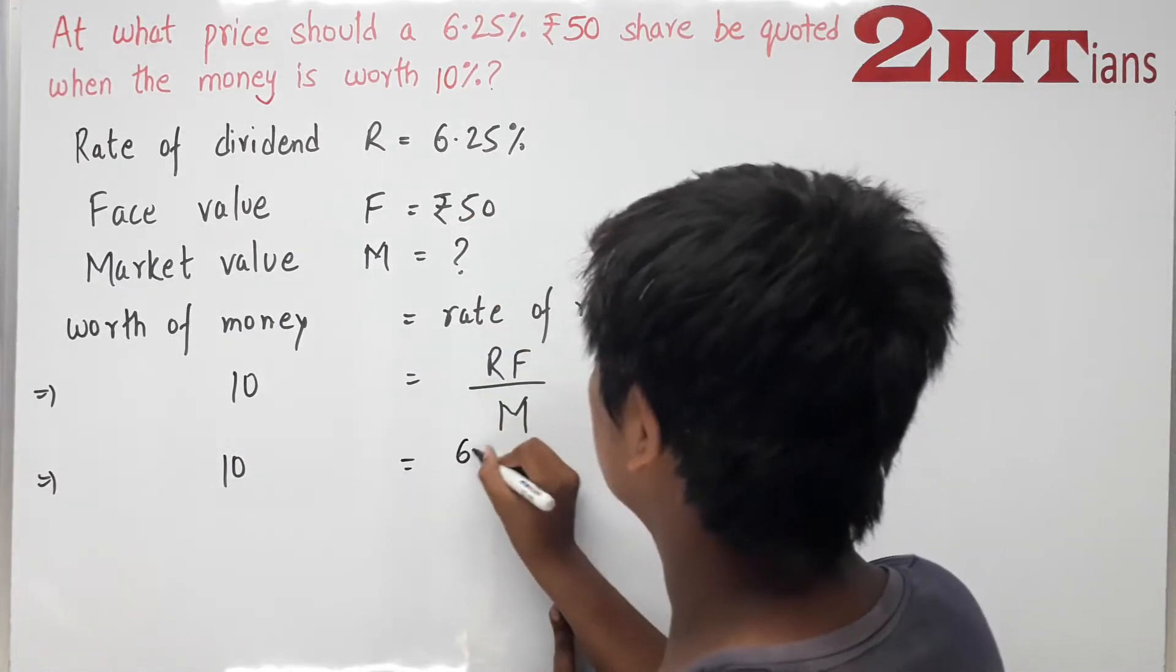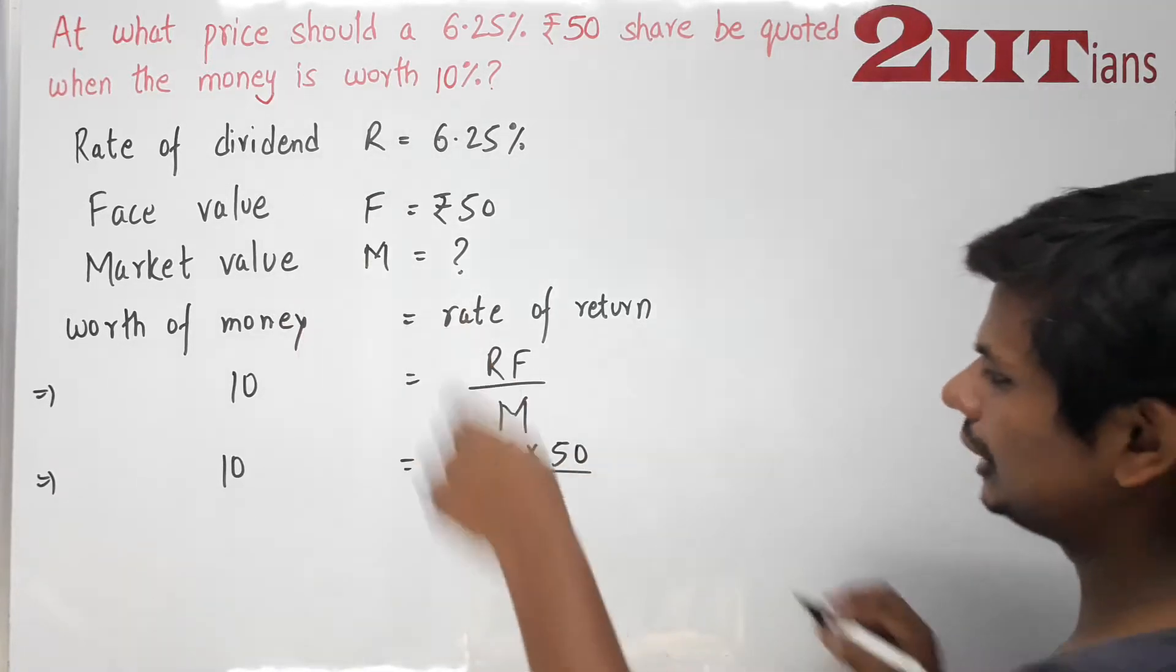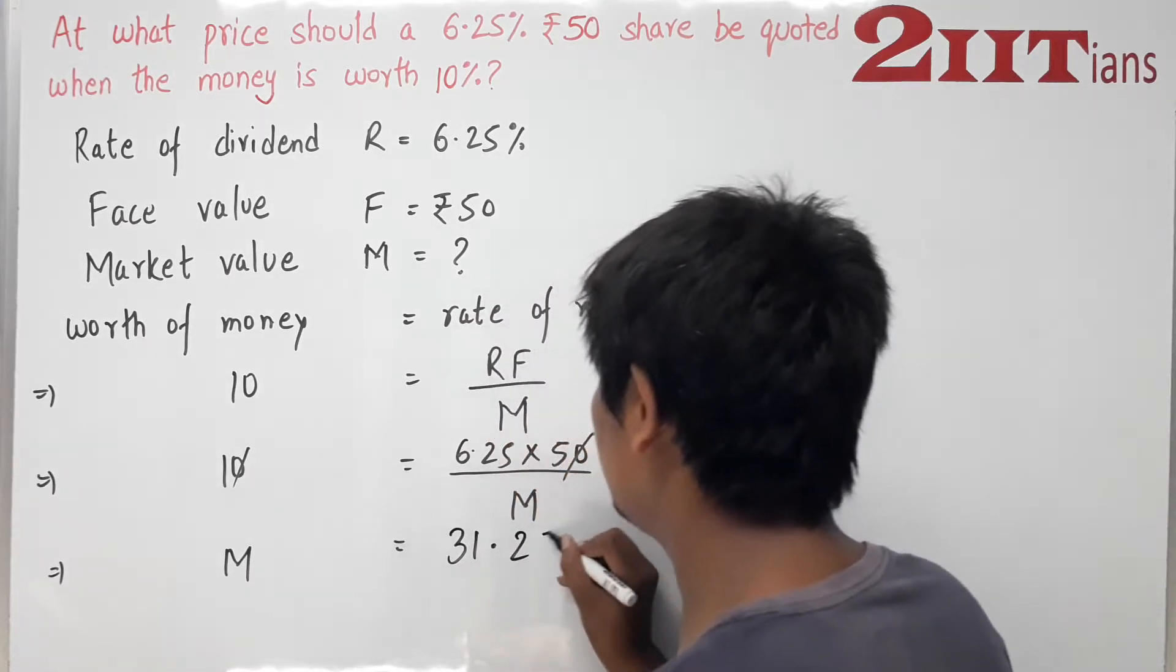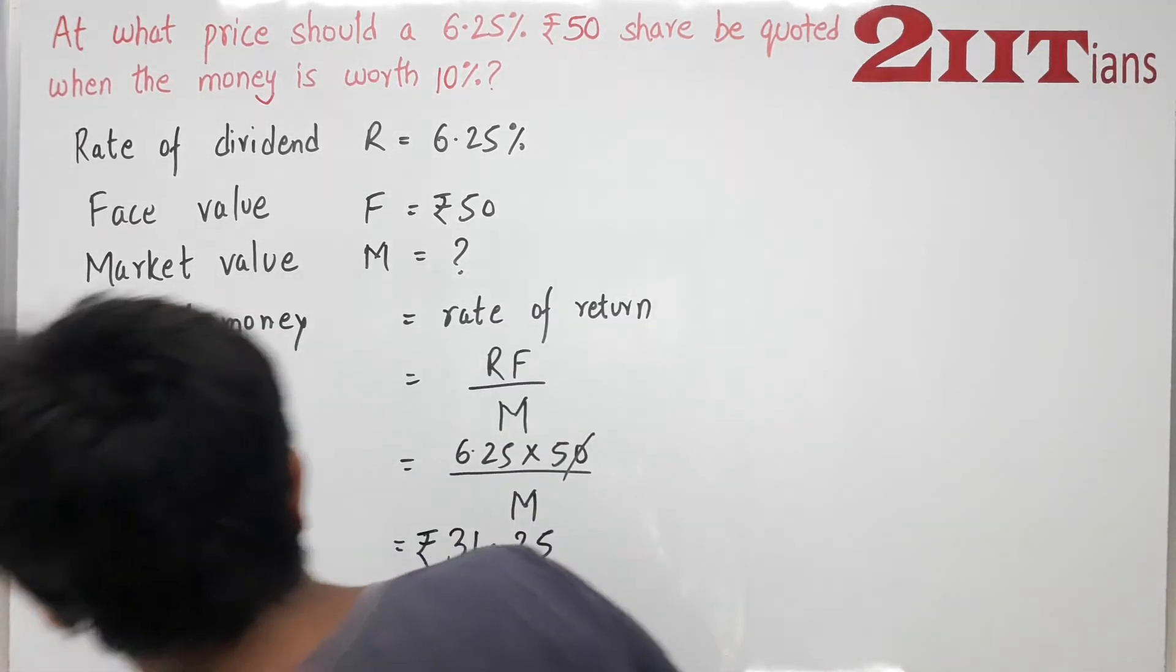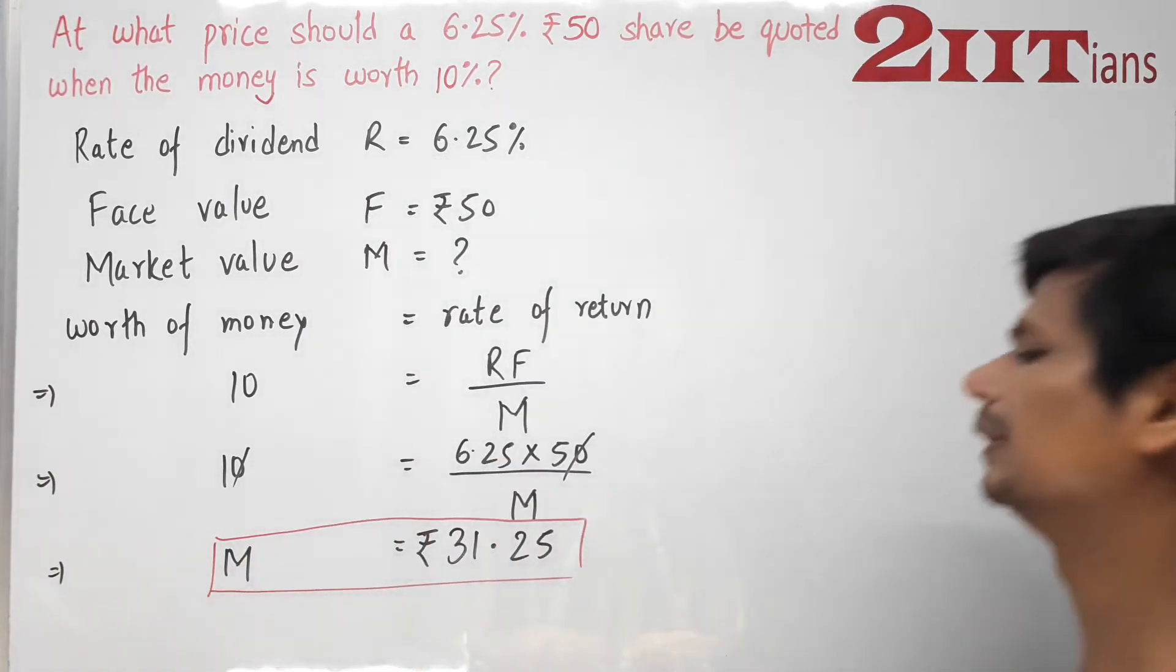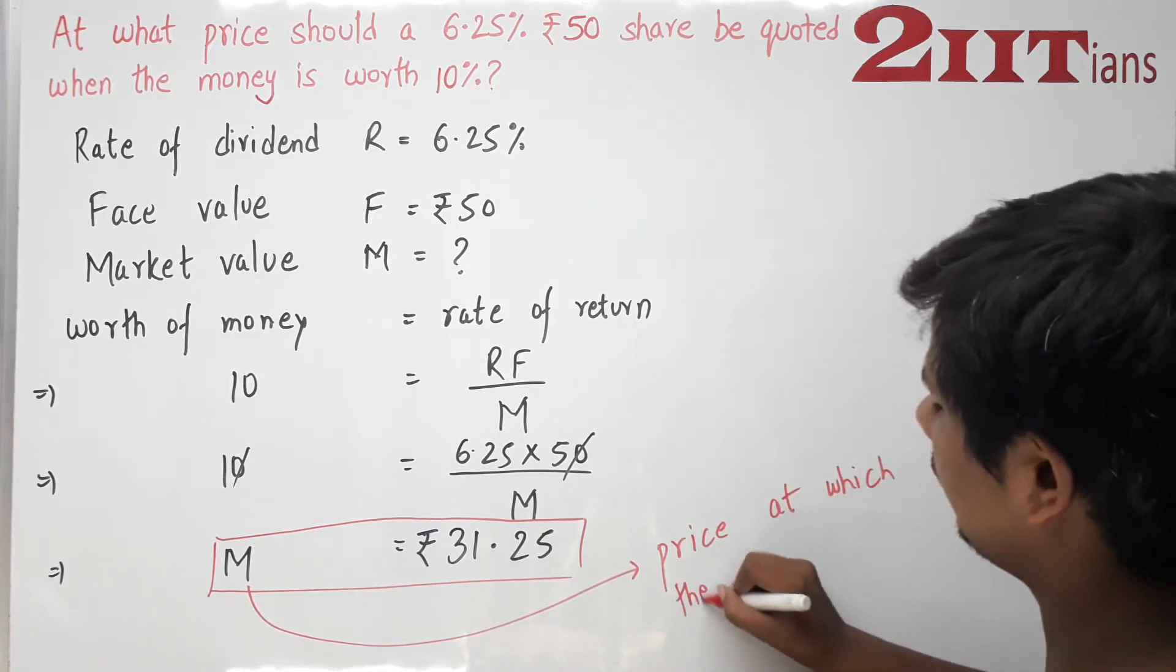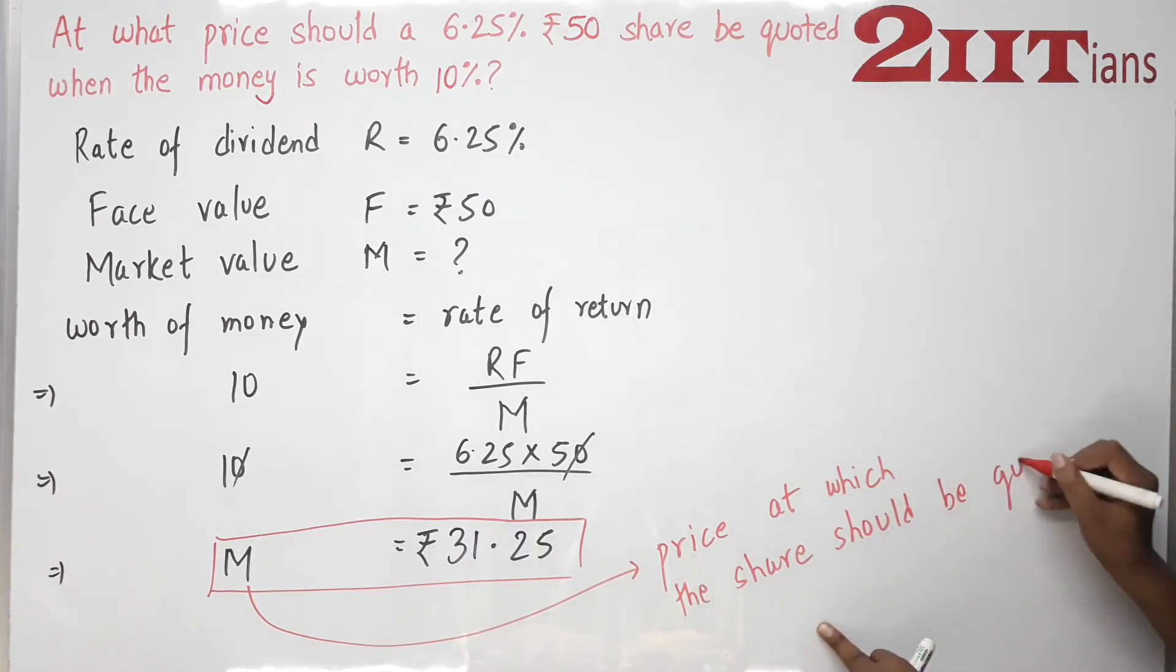6.25 into F 50 हो गया, M कैलकुलेट करना है. M उस साइड चला जाएगा, एक तरीके से हमें कैलकुलेट करना है. 6.25 × 5 यह जाएगा, 31.25 rupees, 31.25, 31 rupees 25 paisa. So this is the price at which the share should be quoted in the market.